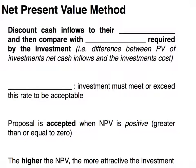When working with the net present value method, we're going to discount the cash inflows to their present value and then compare that with the capital outlay. Capital outlay is simply the cost of the asset. So what we're basically doing is taking the difference between the present value of the cash inflows and comparing that with the cost of the asset or cost of the investment.